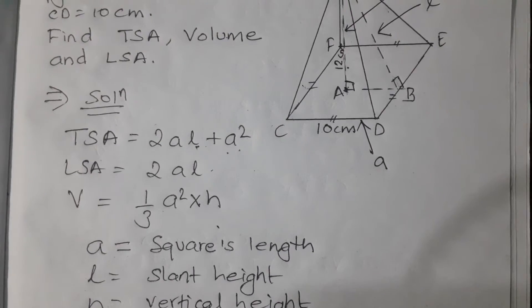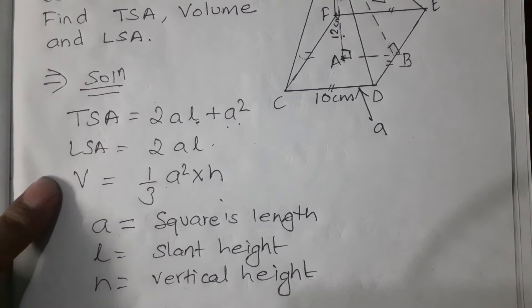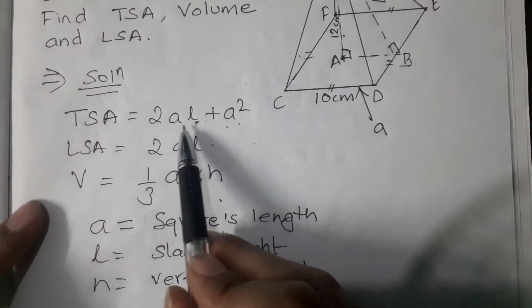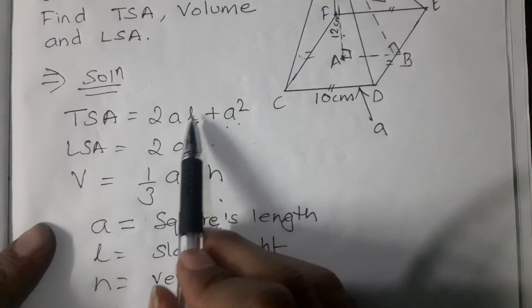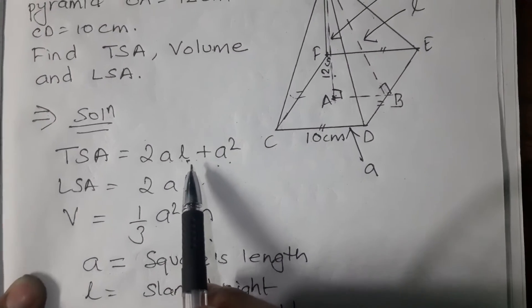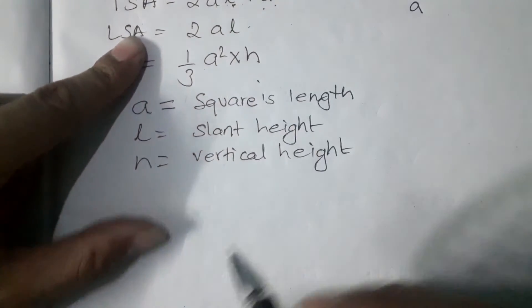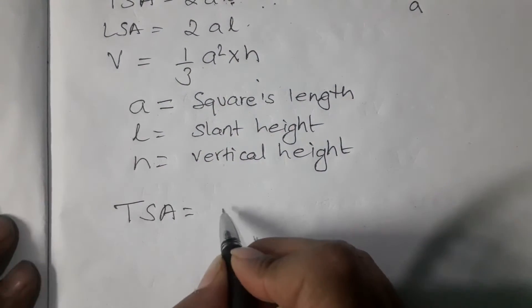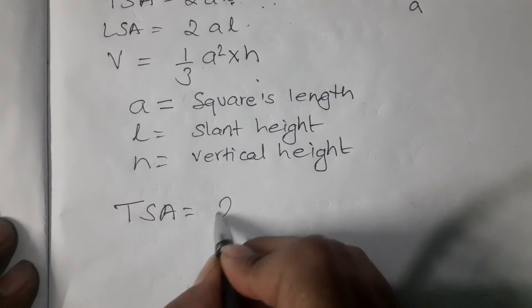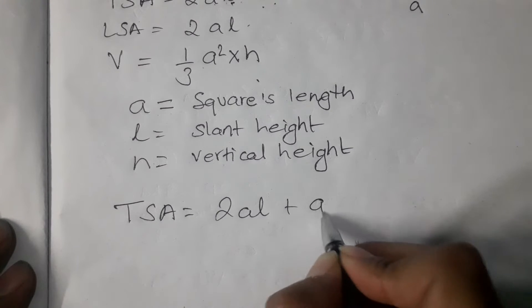So how do we approach the question? We work with TSA, LSA, and Volume, and we can change the question in terms of A and L. Now we have to find the total surface area. The total surface area formula is 2AL plus A squared.